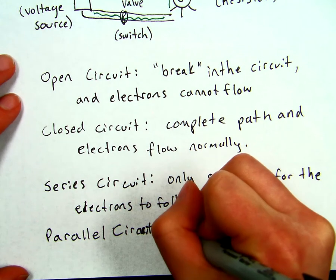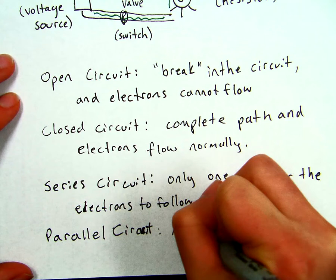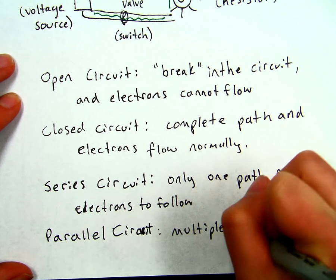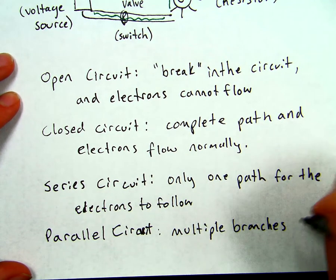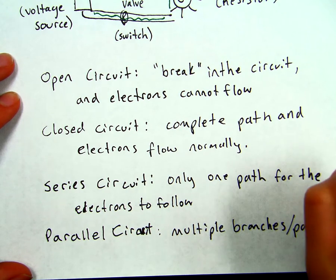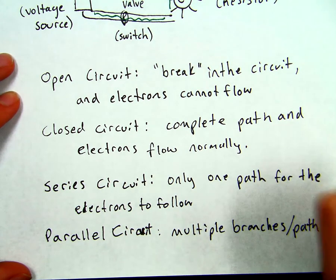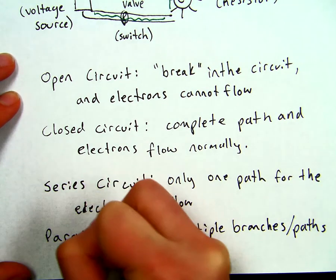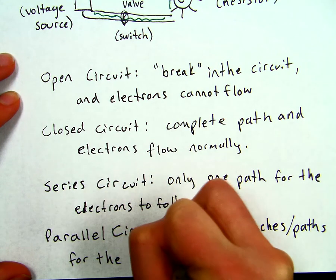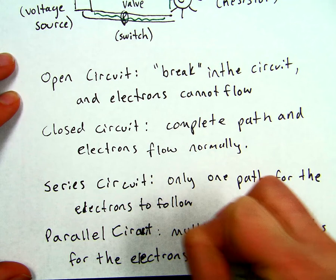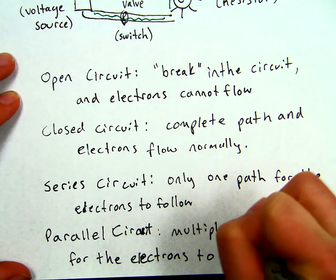In a parallel circuit, there are multiple branches or paths for the electrons to follow.